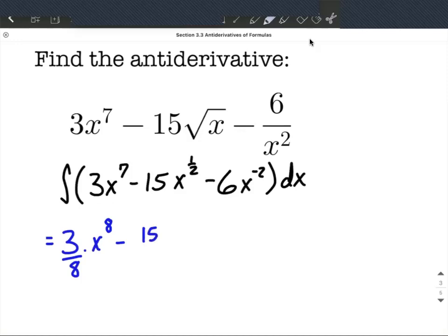Minus, the 15 comes along. We're going to increase the exponent by 1, so 1 half plus 1, or 1 half plus 2 halves is 3 halves. And then we want to divide by that new exponent, but because it's a fraction, it's equivalent to multiplying by its reciprocal. So 2 thirds.